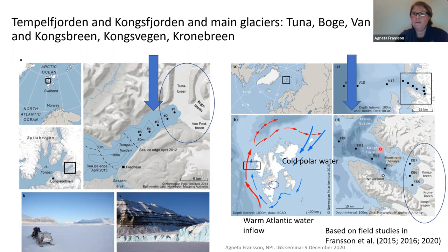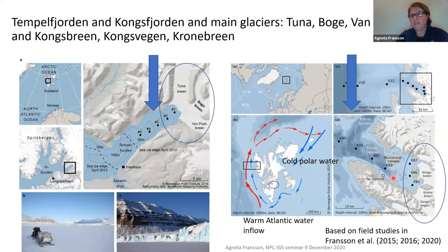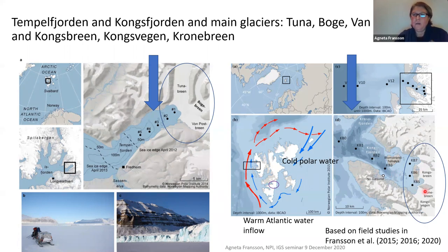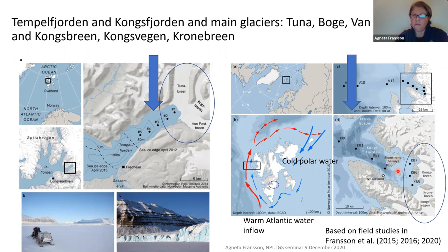Kongsjorden, on the right-hand side, is a 20-kilometer-long fjord. The outer part has no pronounced sill, but the inner part has a shallow sill of about 20 meters depth. There are also three main glaciers in the inner part of the fjord: Kongsbreen, Kronebreen, and Kongsvegen. Kongsbreen and Kronebreen are tidewater glaciers. Sea ice in the fjord also varies a lot between years.